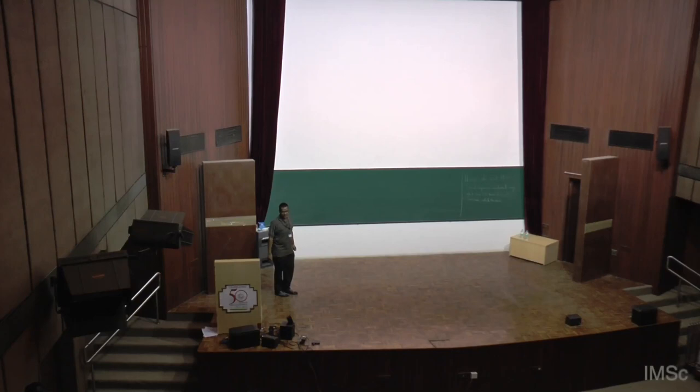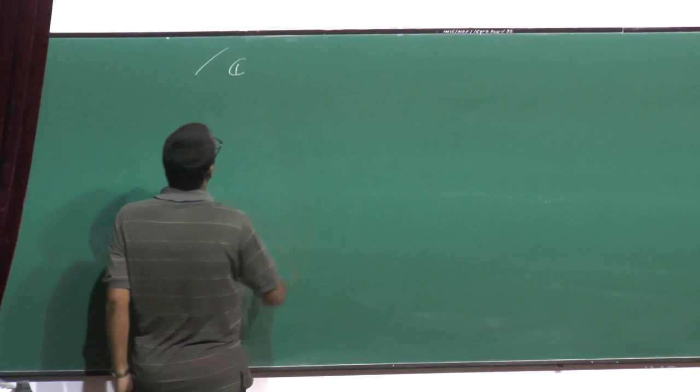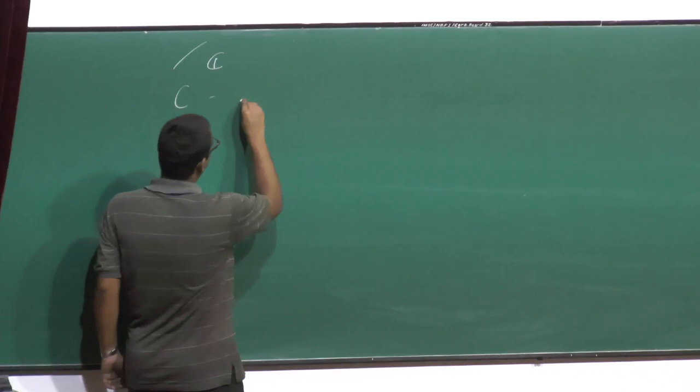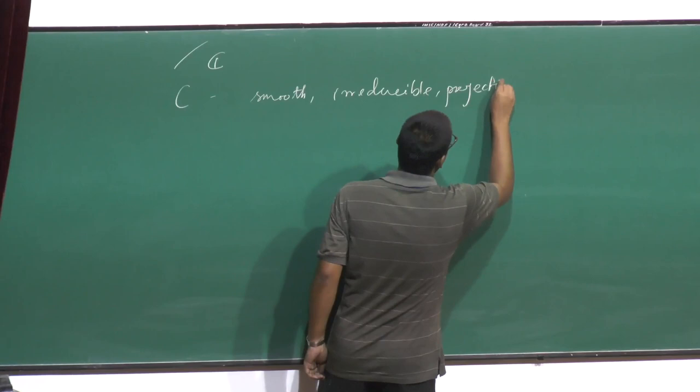I will talk about second bundles on symmetric powers of curves. I will work over the complex numbers. Let me say first that C is a smooth, irreducible, projective curve.